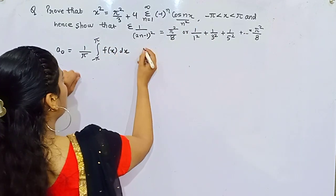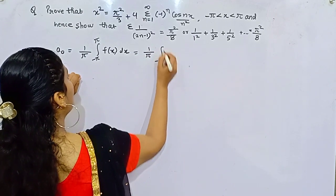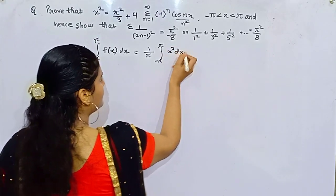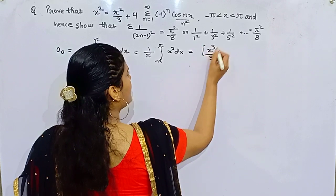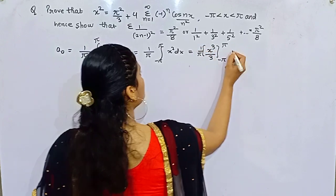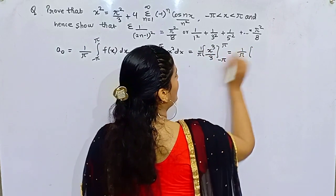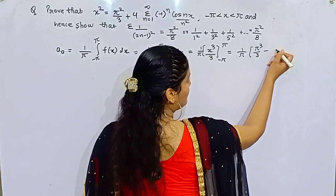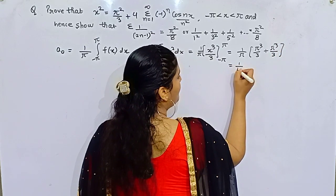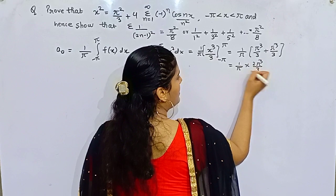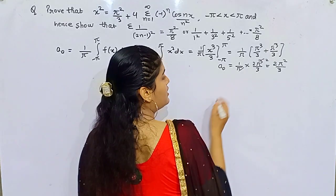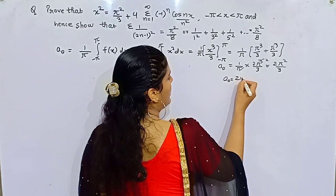Your function is x squared here, so we integrate x squared dx. This gives x cubed by 3. Now applying the limits minus pi to pi with 1 by pi out front: upper limit minus lower limit gives pi cubed by 3, minus the lower limit which is minus pi cubed, making it plus pi cubed by 3. So 1 by pi times 2 pi cubed by 3, that means 2 pi squared by 3. This is your A0: A0 = 2π²/3.